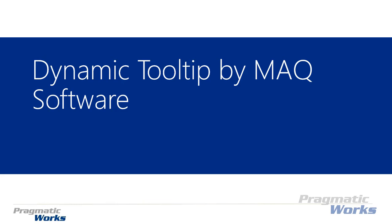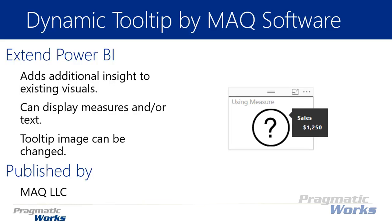Welcome back to the Power BI custom visuals course. In this module we're going to be looking at the Dynamic Tooltip by MAQ Software. This is a really nice add-on or feature to other charts that you have. It is found underneath the visualization gallery or library and you can import it the same way you would any other visual, and it's a great way to add additional insight to existing visuals.